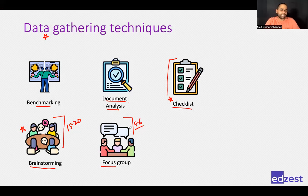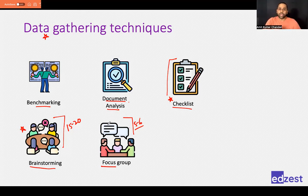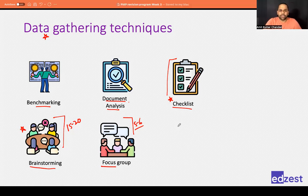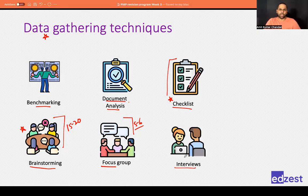In these meetings, there could be people who are not very extroverted — they don't talk a lot but must have some opinion or knowledge. For that, you do a one-to-one discussion, which is called interviews. You go to that person, talk to them, and discuss whatever you want. This will also help you gather data.